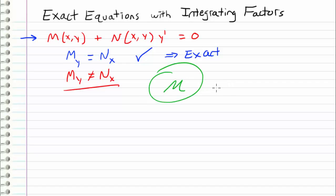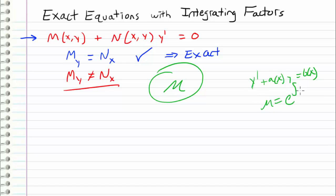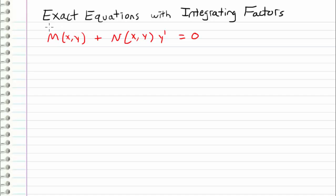What we're going to do in the next step is derive an expression for our integrating factor μ, just like we derived an expression for the integrating factor of a differential equation of the form y' + a(x)y = b(x). But now we're dealing with a whole different form, so we can't use that integrating factor — we're going to have to derive a new one. The whole point of an integrating factor is to multiply through the entire equation and turn it into an exact equation.